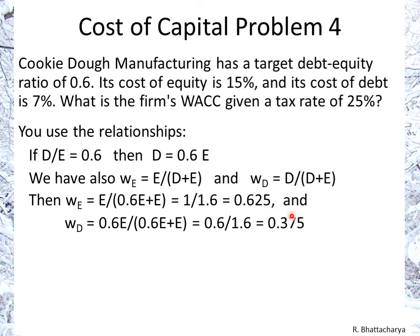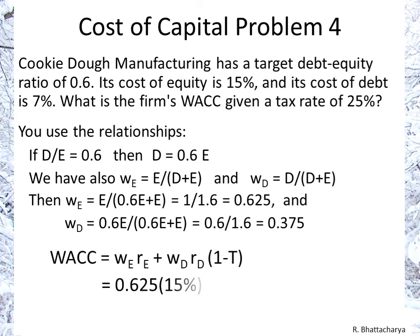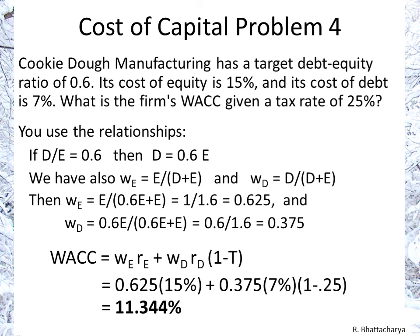The weight of debt is 0.6 equity over (0.6 equity + equity), which is 0.6 over 1.6, or 0.375. These two weights add up to 1. With those two numbers, we can calculate WACC the regular way — using the weights, the rates, and the tax rate of 25% — giving us a WACC of 11.344%.